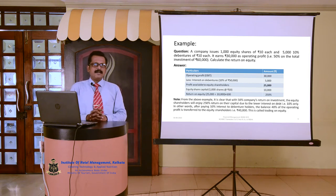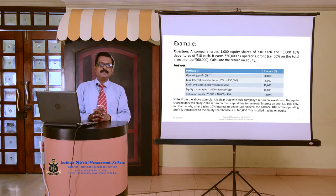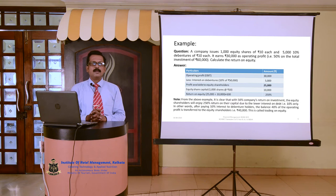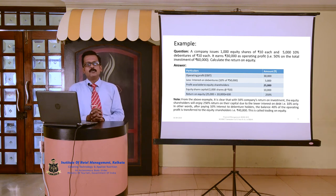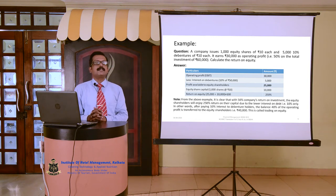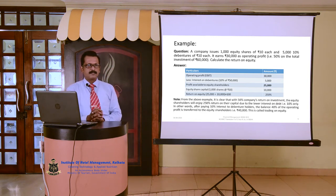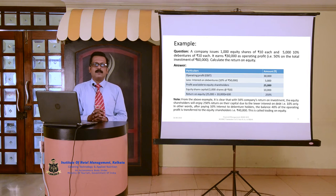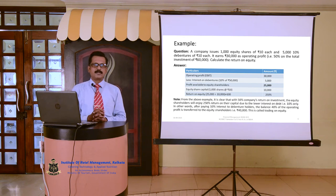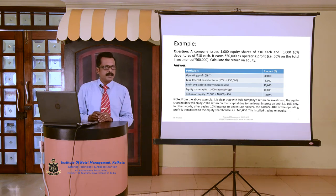From the above example, it is clear that with the company's 50% return on investment, the equity shareholders will enjoy 250% return on their capital. This is due to the lower interest rate of only 10%. After paying 10% interest on debentures, the balance 40% of the operating profit is transferred to the equity shareholders. This is called trading on equity.